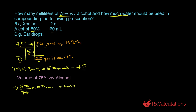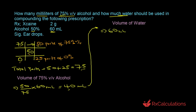To determine the volume of water, take the total volume of 60 milliliters and subtract the volume needed for the 75% alcohol: 60 milliliters minus 40 milliliters equals 20 milliliters of water.